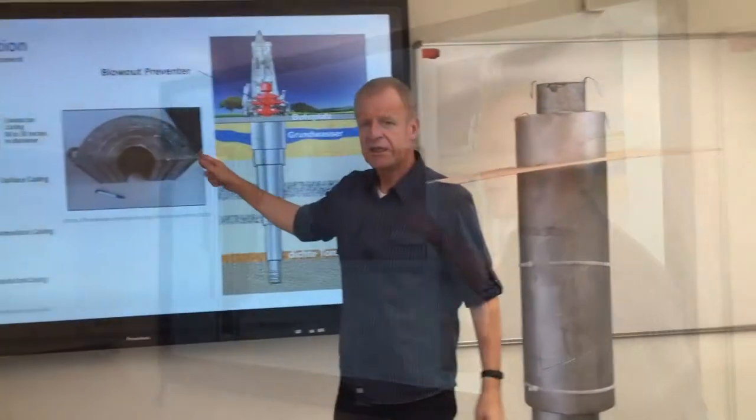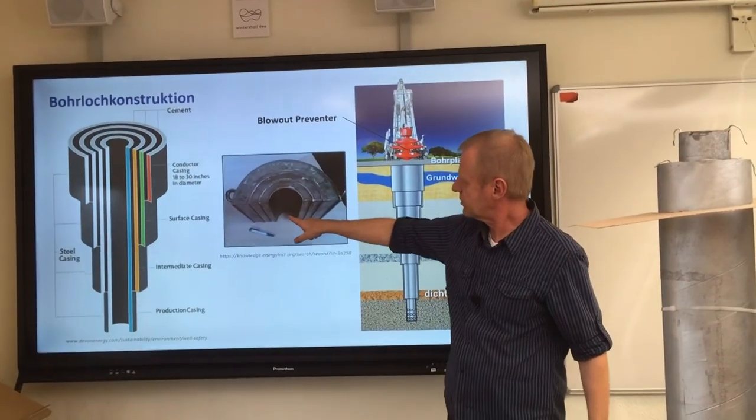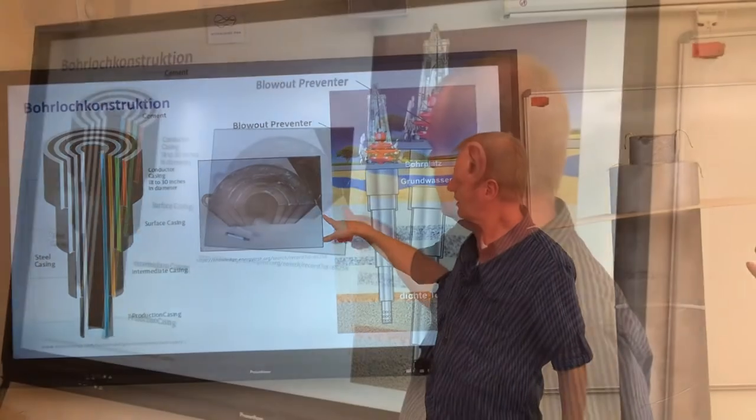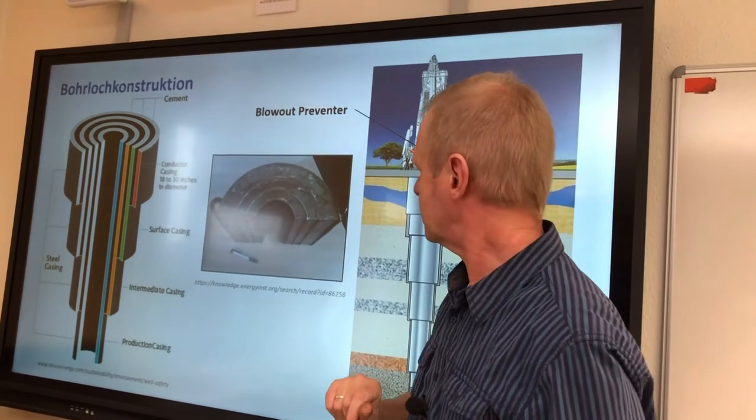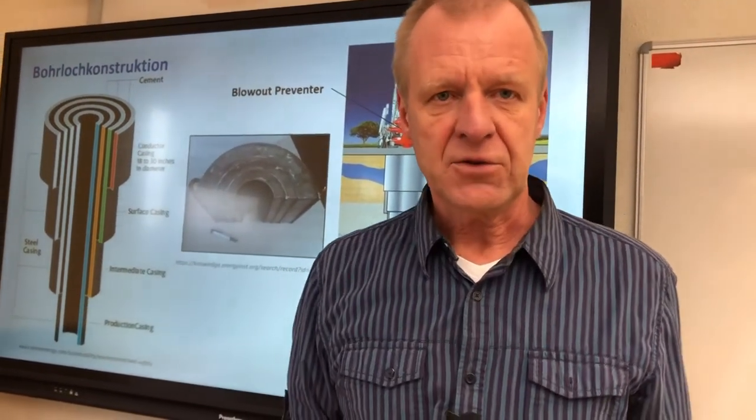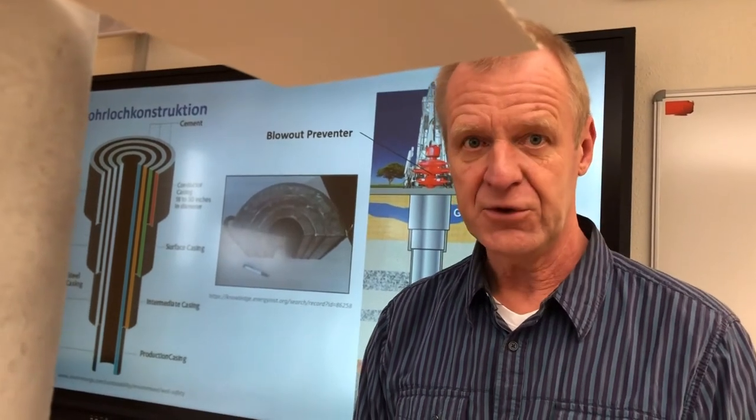So, if we take a cross section of the hole, we will always have steel pipes, cement barriers, steel pipes, cement barriers between the hydrocarbon inside the hole and the formation. In this way, we make sure our drilling is not a danger to the environment.